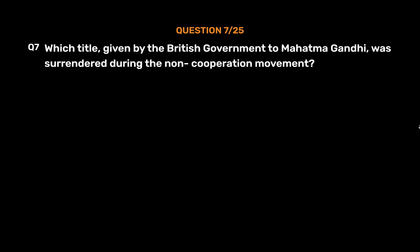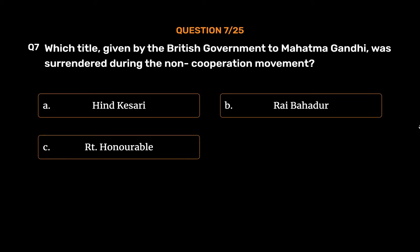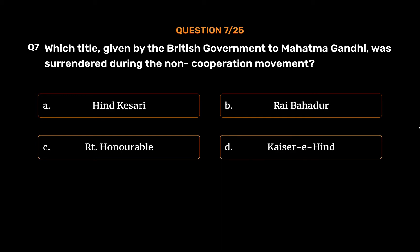Question No. 7. Which title, given by the British government to Mahatma Gandhi, was surrendered during the non-cooperation movement? Option A: Hindukesari. Option B: Raya Bahadur. Option C: Right Honorable. Option D: Kaisari Hind.